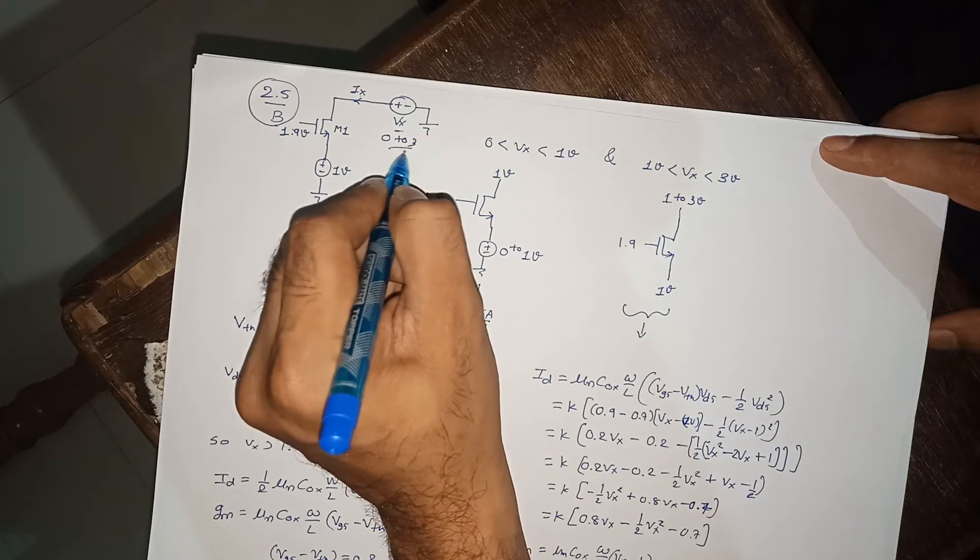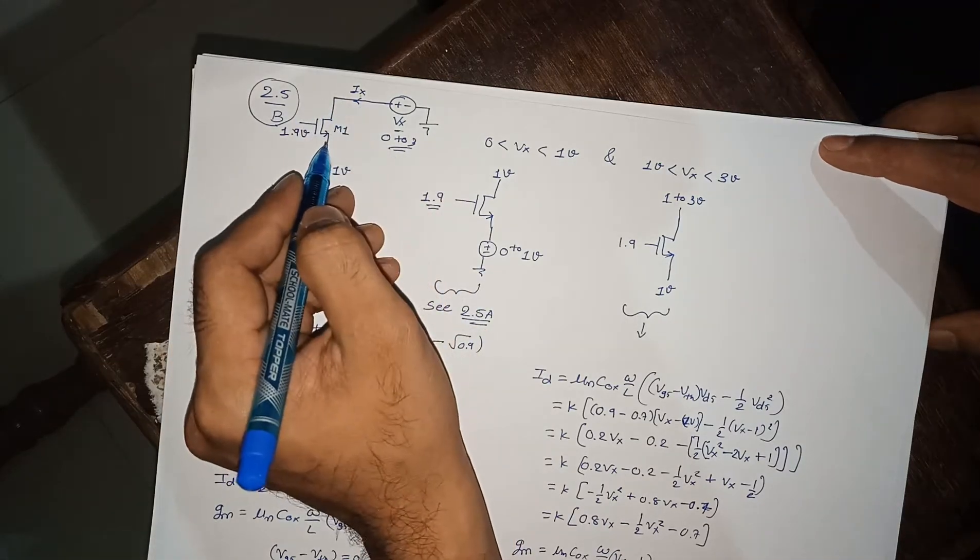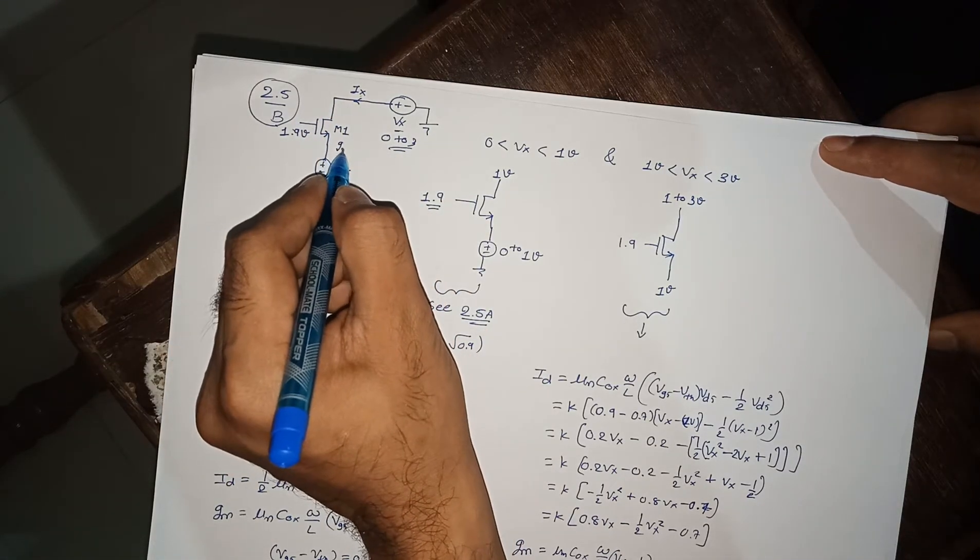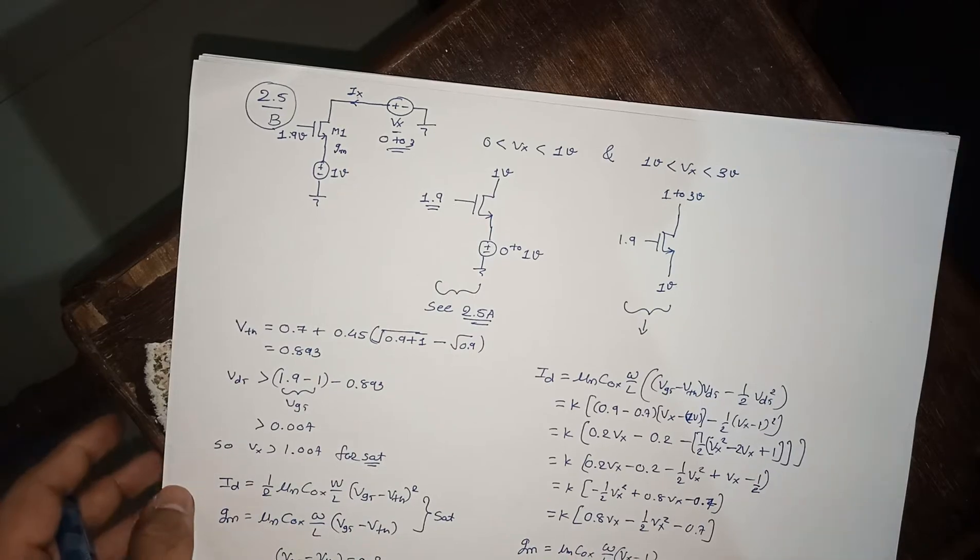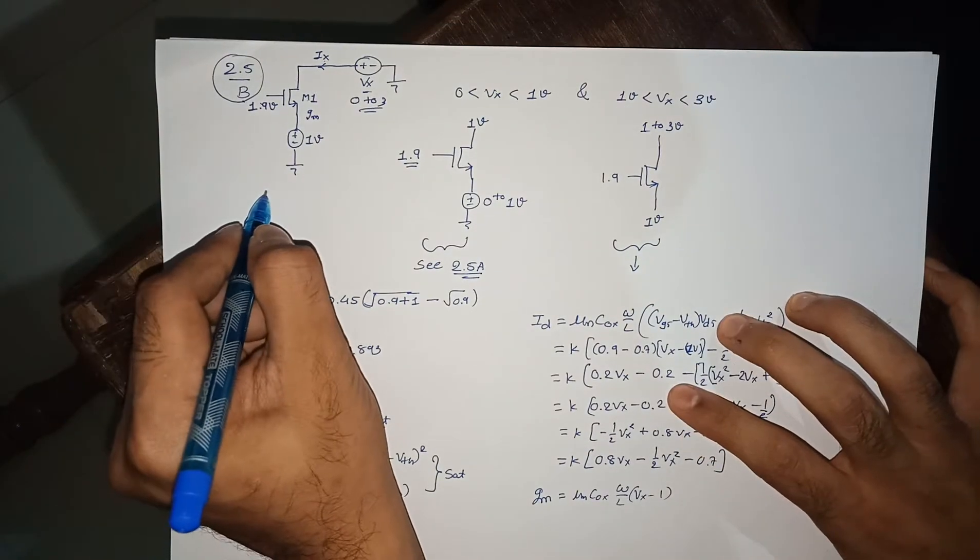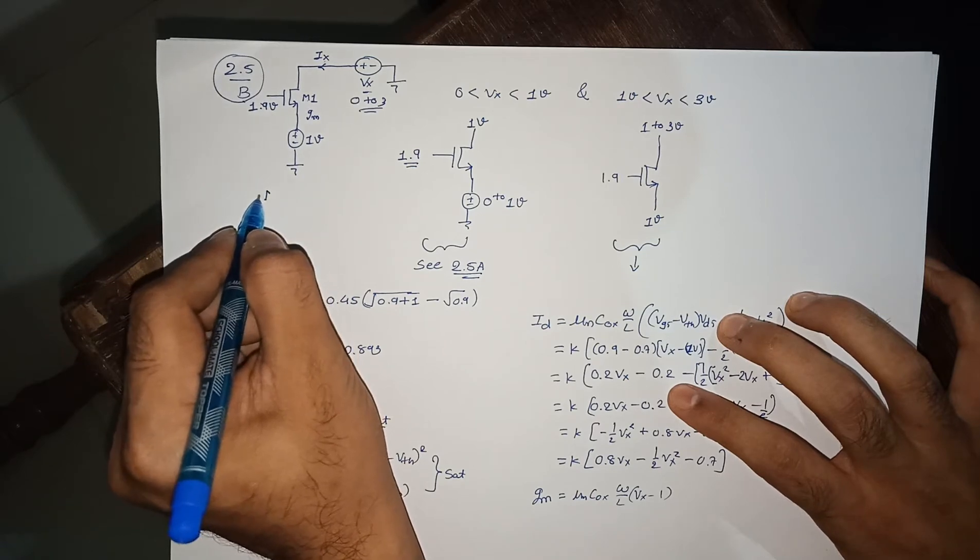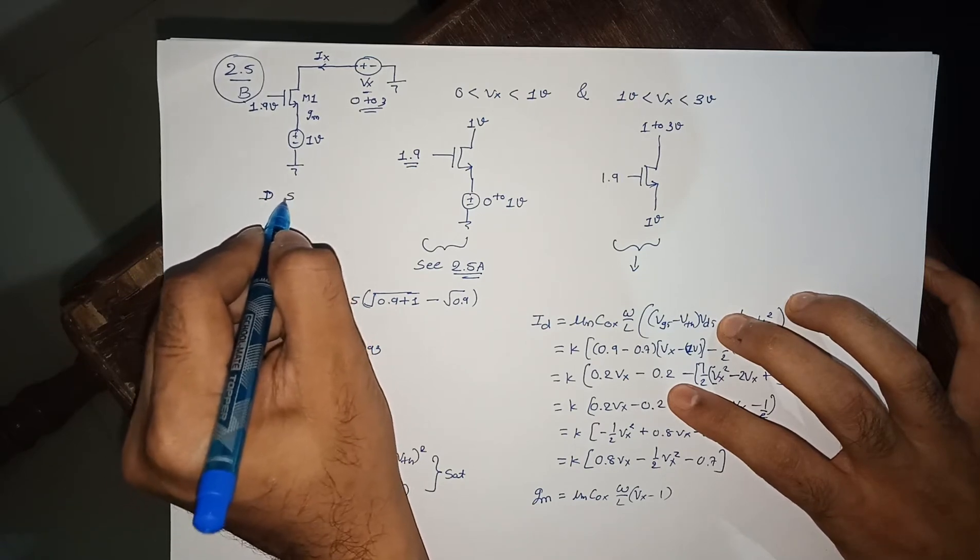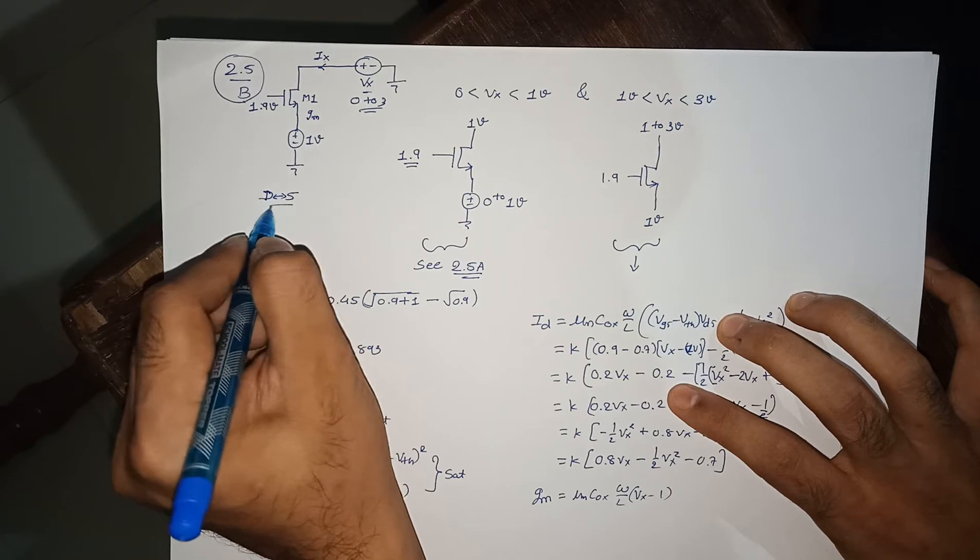We need to find the IX and the gm of M1. The first point you need to consider is your drain and your source are interchangeable. Basically, whoever is having higher potential will be drain, lower potential will be source.